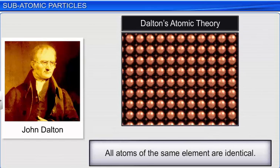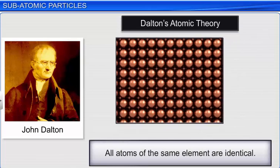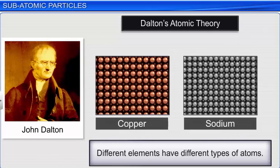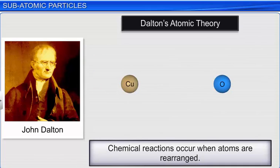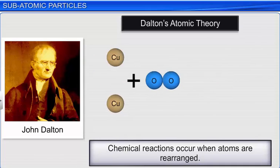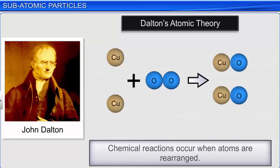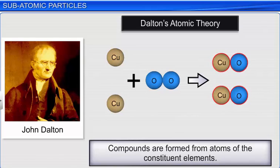All atoms of the same element are identical. Different elements have different types of atoms. Chemical reactions occur when atoms are rearranged. Compounds are formed from atoms of the constituent elements.